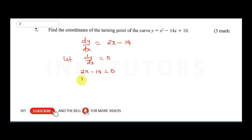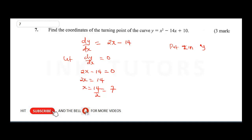This gives 2x equals 14, therefore x equals 14 divided by 2, which is seven. To get the y-coordinate, substitute x equals seven back into the original equation: y equals x squared minus 14x plus 10.